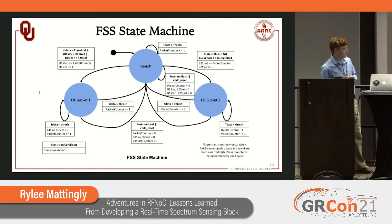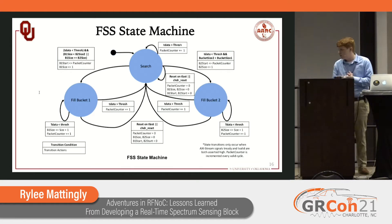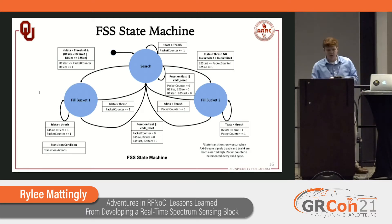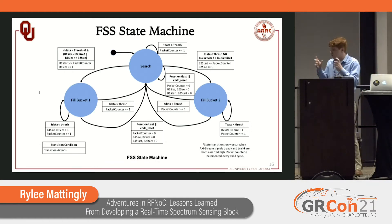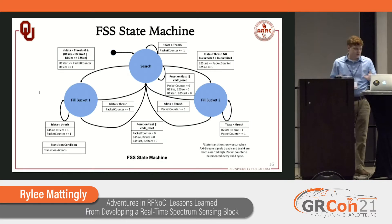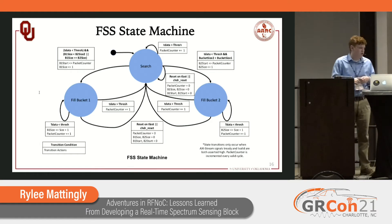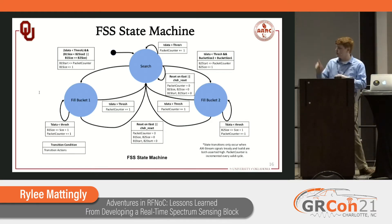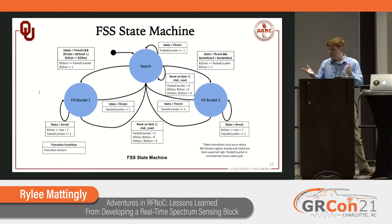Here's our FSS state machine in all its glory. We start in the search state. When we encounter a low power bin, we look at the sizes and move into whichever state fills the bucket for the smallest size. If both are zero, we go into fill bucket one. We stay there and count low power bins until we encounter a high power bin, in which case we go back to search. Or if it's TLAST, then we do our resets and copy our largest bin to our send bucket and reset the state machine.